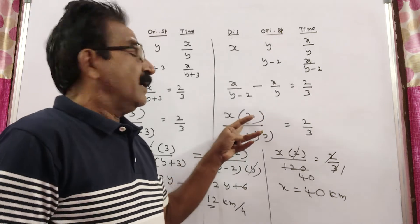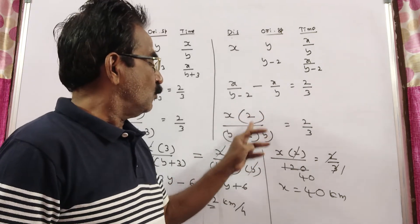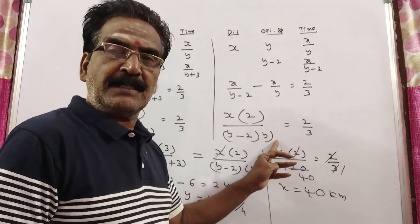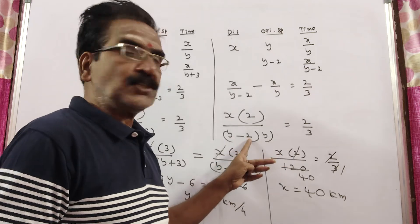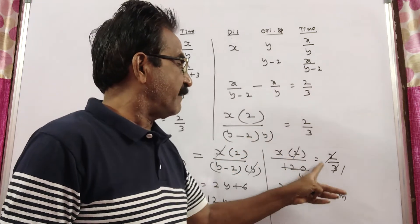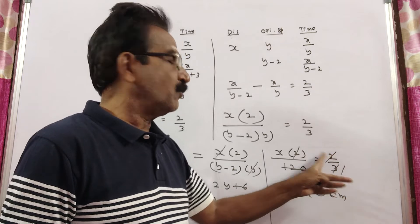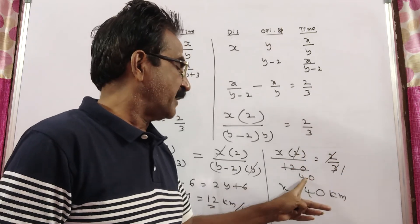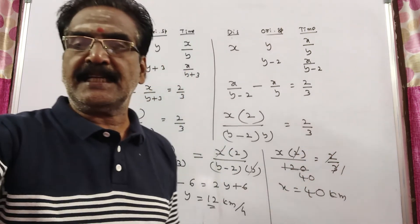Let us substitute this y value here. x into 2 by y minus 2 into y: 12 minus 2 is 10 into 12, which is 120, equals 2 by 3. 2 gets cancelled, so x is equal to 40 km.